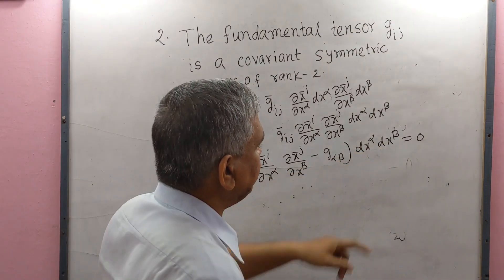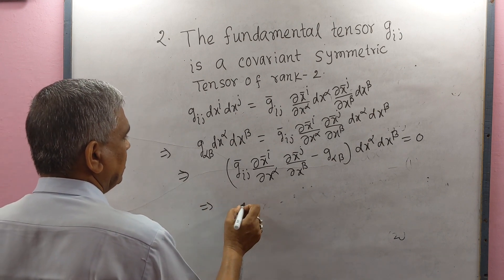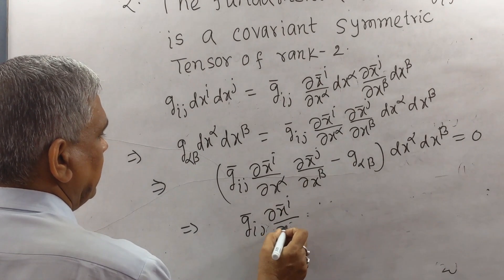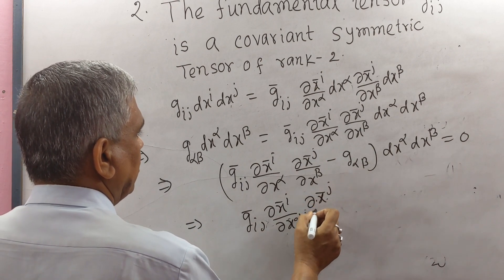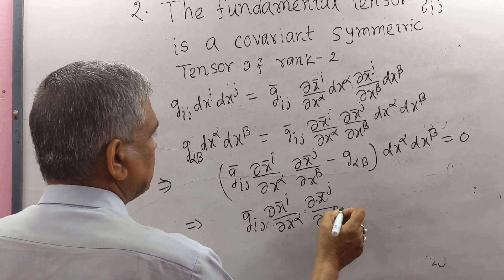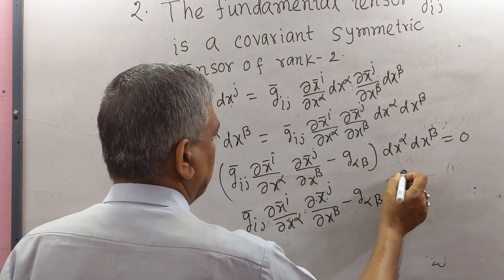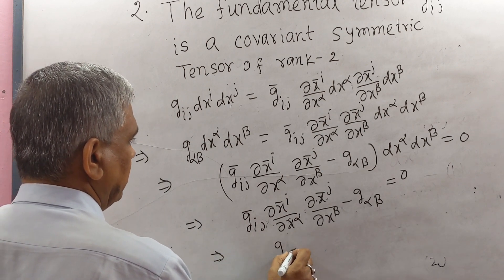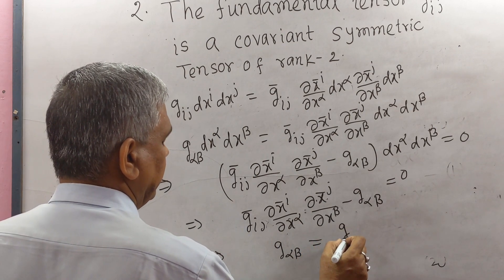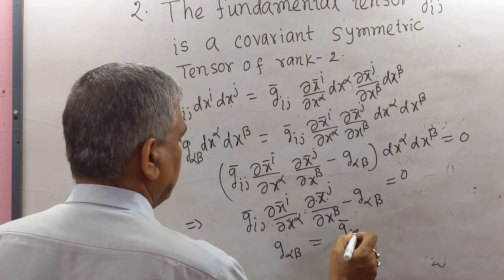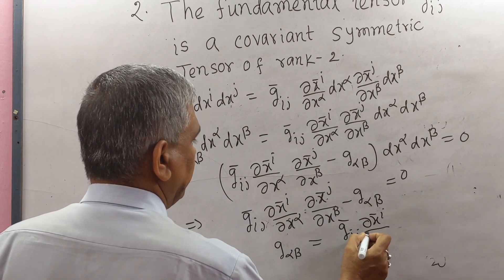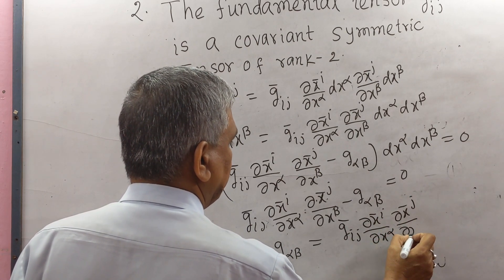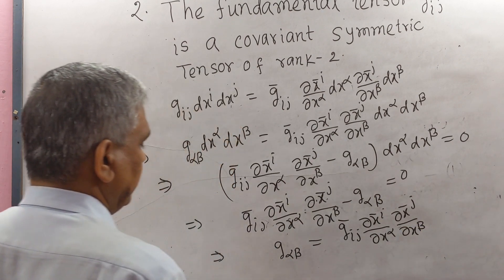Since dxα and dxβ are arbitrary, we may write: ḡ_IJ · (∂x̄I/∂xα) · (∂x̄J/∂xβ) − g_αβ = 0. This implies: g_αβ = ḡ_IJ · (∂x̄I/∂xα) · (∂x̄J/∂xβ).